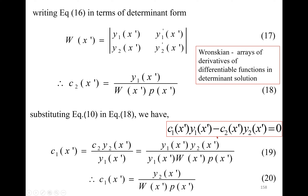Similarly, substituting equation 10 and the expression for C₂ into the continuity equation, we find C₁. From C₁(x') = C₂(x')·y₂(x')/y₁(x'), we substitute for C₂. The y₁(x') terms cancel, giving: C₁(x') = y₂(x') / [W(x') · p(x')]. So we have now found both C₁ and C₂ in terms of the Wronskian.